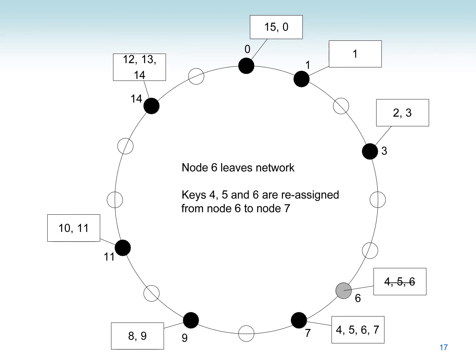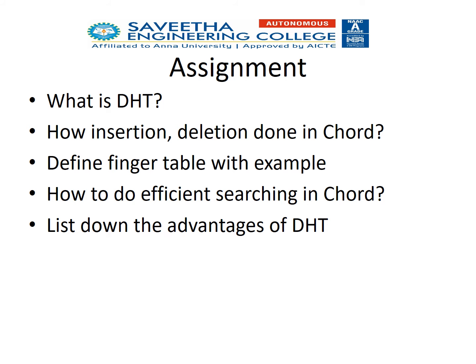So this is how Chord maintains searching, joining, and leaving of nodes in the network using node and key values. Everything is based on the key value — we search the key with the corresponding node value, and if the node is not present, we search the successor node. To make the search efficient, we use the finger table. Based on the presentation, you have to answer: what is a distributed hash table, how insertion and deletion is done in Chord, how the finger table is formed with an example, how to do efficient searching in Chord, and list the advantages of the distributed hash table.